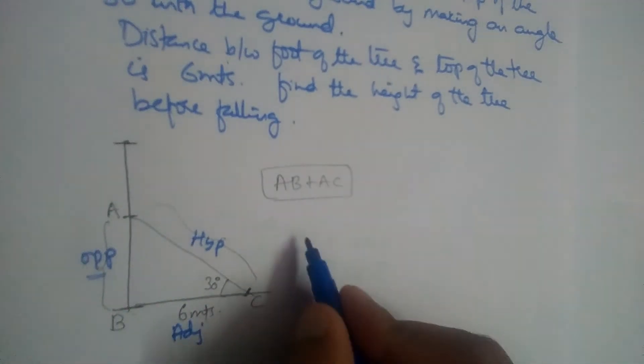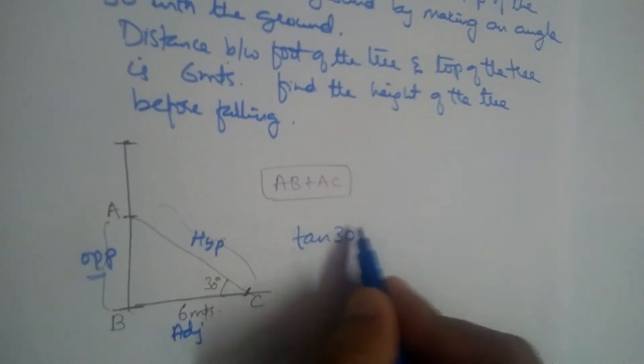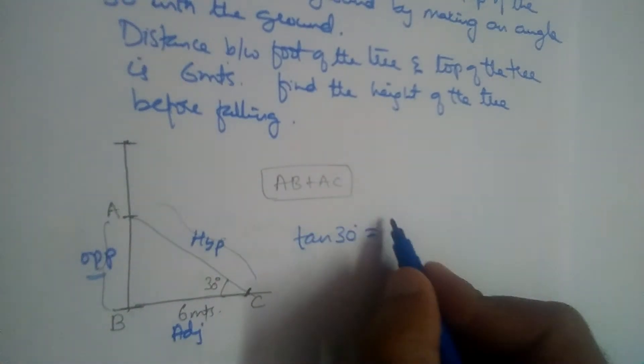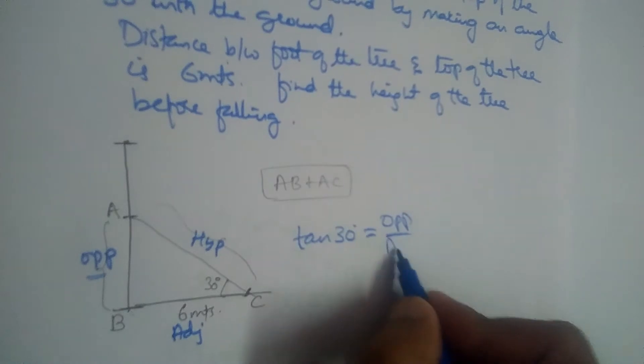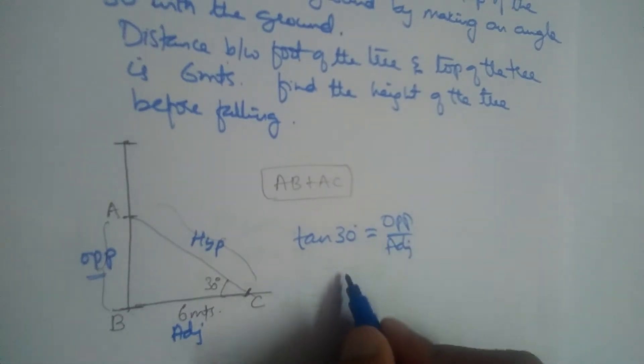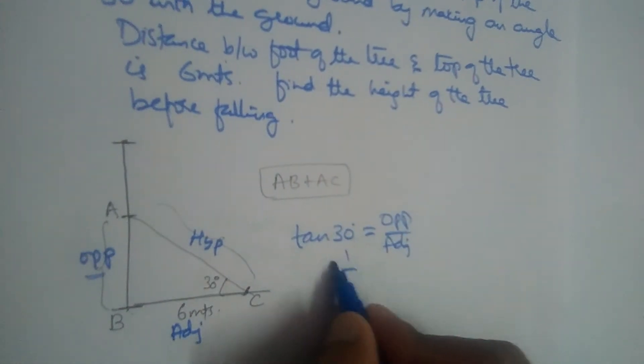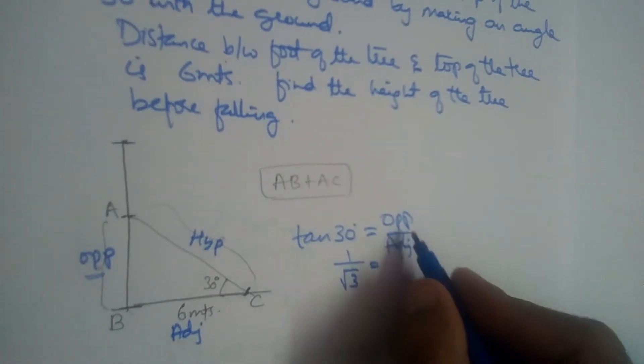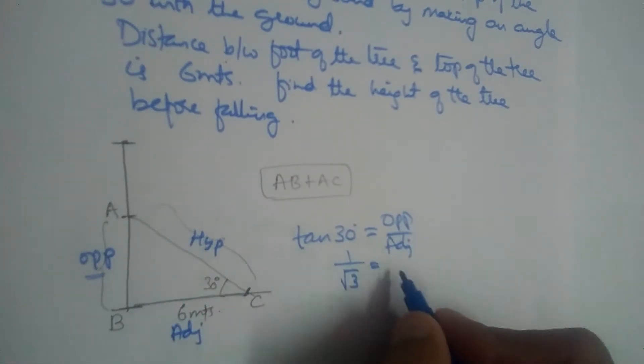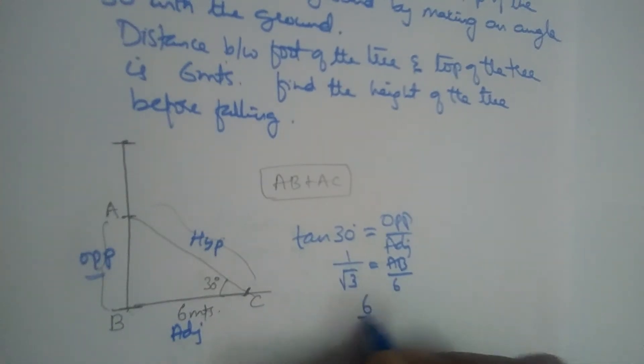So opposite and adjacent is in tan formula. So tan 30 degrees is equal to opposite divided by adjacent. Tan 30 is 1 by root 3. So 1 by root 3 is equal to what is the opposite side? We don't know. It is AB divided by adjacent is 6. So cross multiply, 6 by root 3.